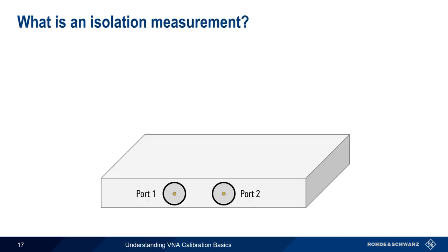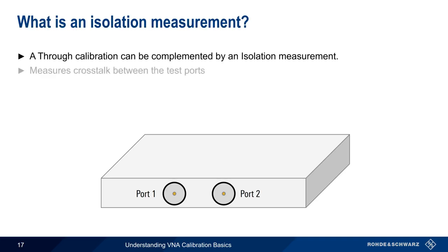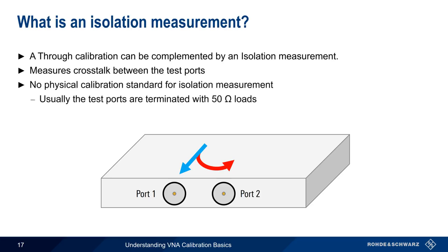There's one last type of calibration procedure called an isolation measurement, which usually complements a through-measurement. Remember that a through-calibration measures the signal passing between the ports via an attached cable and connected devices. An isolation measurement is used to determine how much internal leakage or crosstalk there is between the test ports. As you might imagine, there's no physical calibration standard for an isolation measurement. The normal procedure is simply to terminate the test ports with 50 ohm loads. In most modern network analyzer measurements, isolation, or rather the lack of isolation, is not a significant source of error.